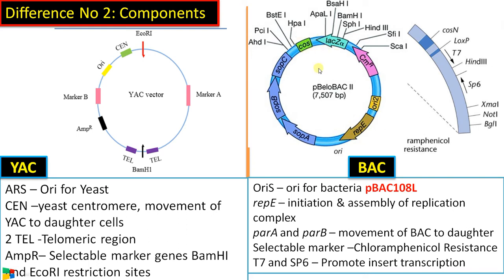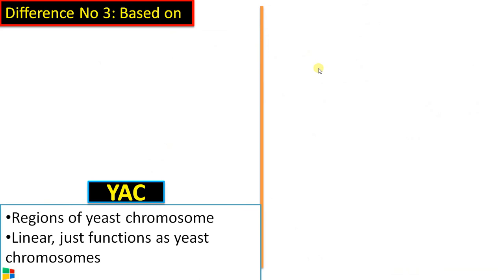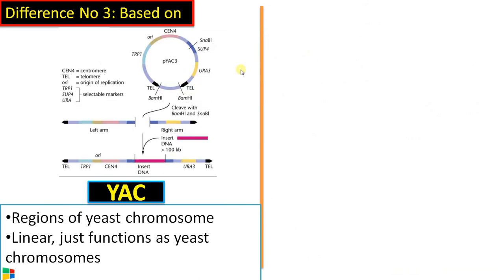Difference number three. YAC vector is primarily based on regions of yeast chromosome. So this centromeric region, ORI, all are taken from yeast itself. So what is happening is, as you can see, there are two telomeric regions in this vector. So here is restriction site for BamH1. This cleaves BamH1 then we can insert our gene of interest in this region.